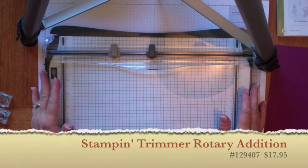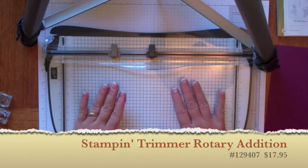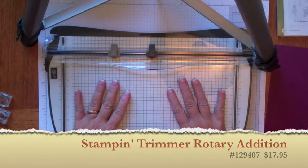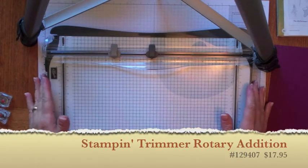It's called the Stampin' Trimmer Rotary Edition and it's $17.95. It turns this existing trimmer into a cutter that has a rotary blade. So let me just show you how it works.